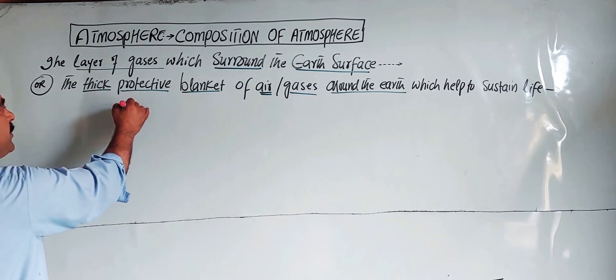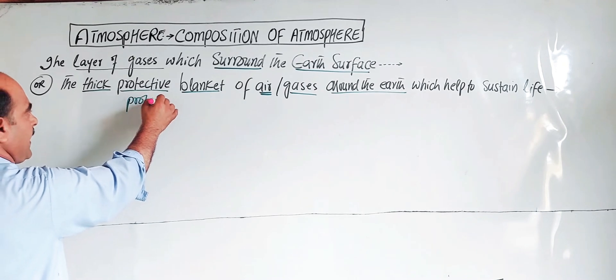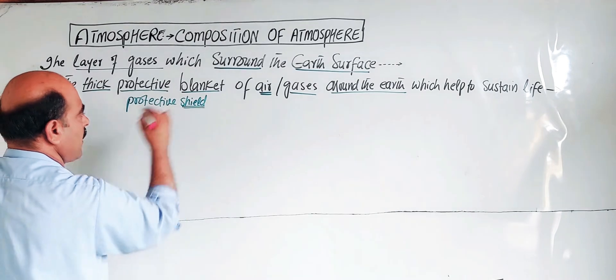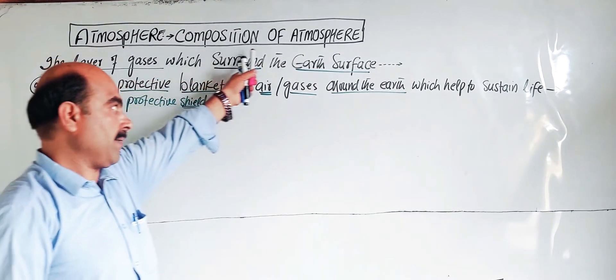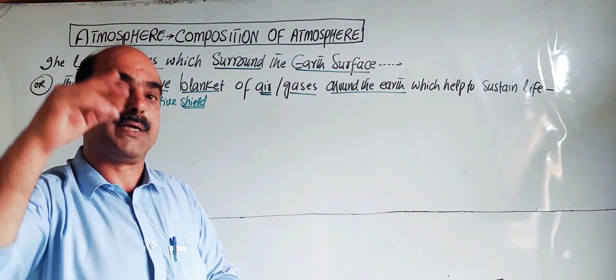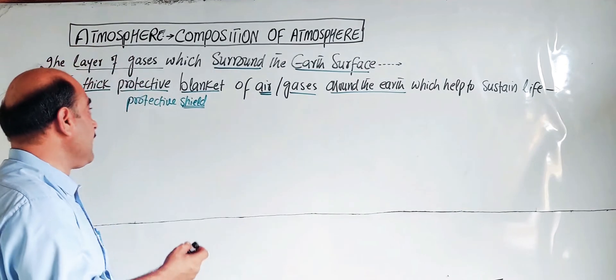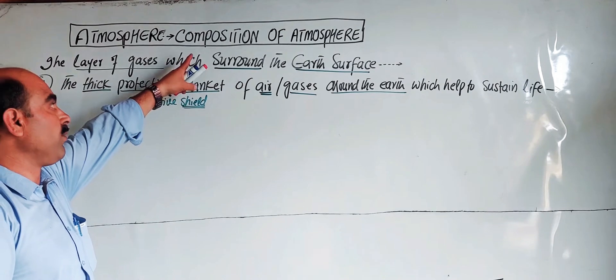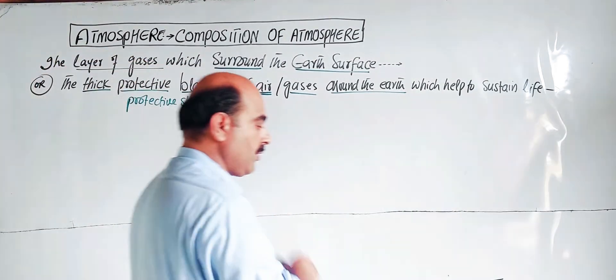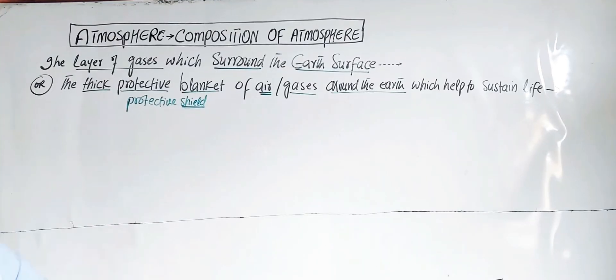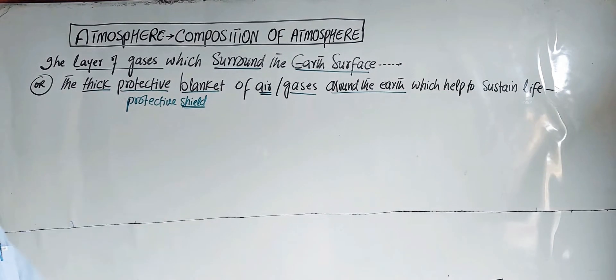Now the atmosphere is a protective shield. Shield means a covering, just like a blanket. This thick blanket of air is known as atmosphere.